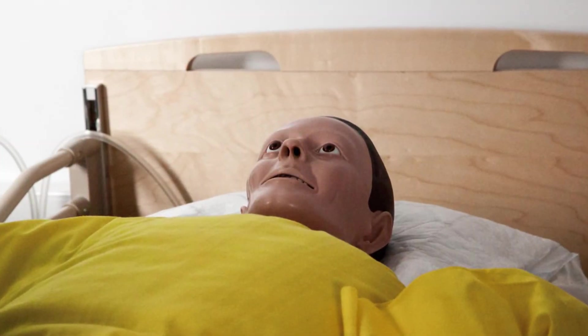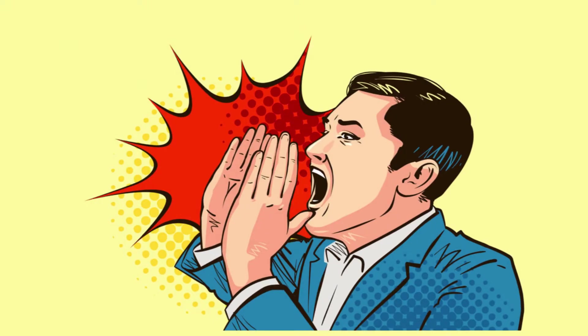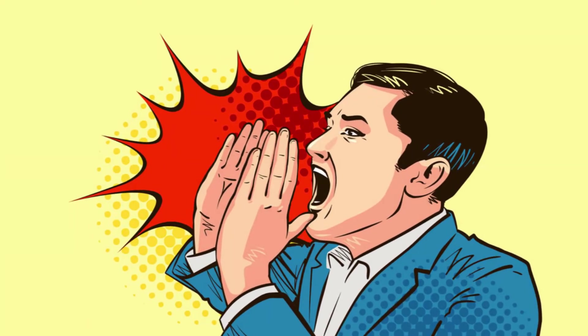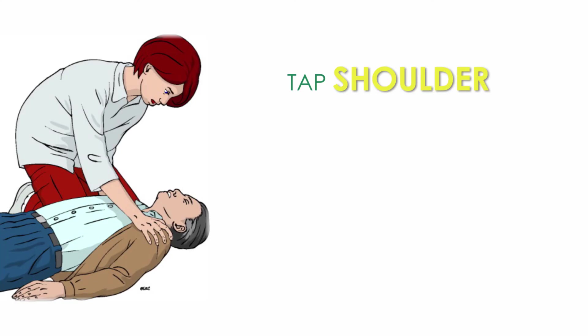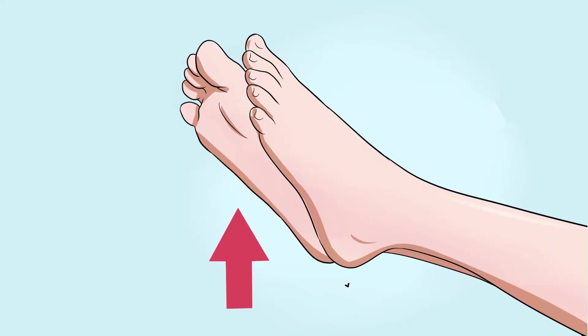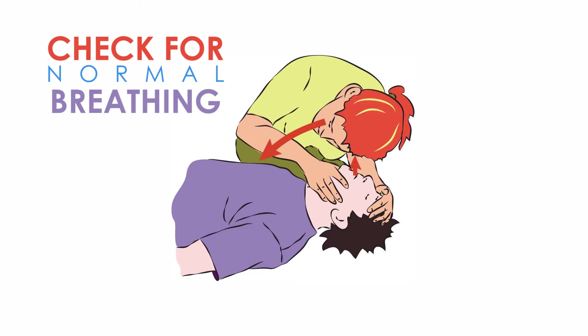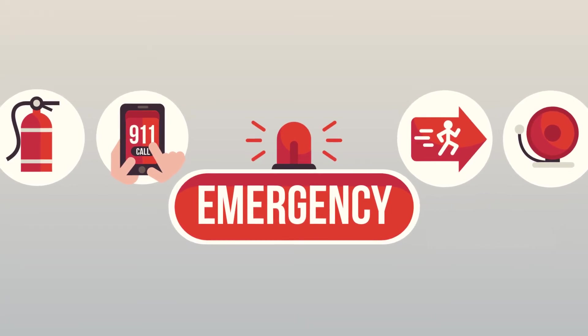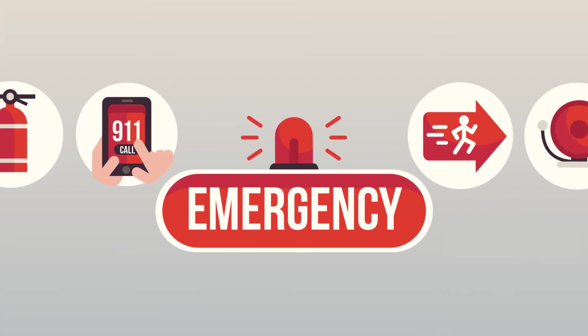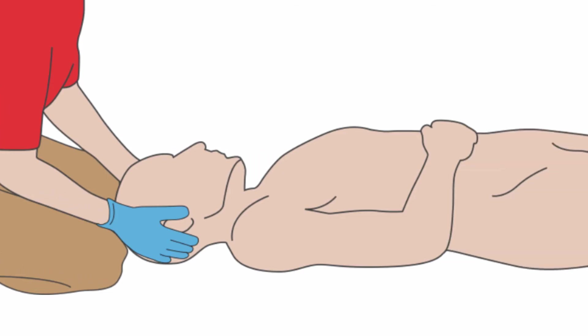If the person appears unresponsive, shout to get the person's attention using their name if it is known. If there is no response, tap the person's shoulder if the person is an adult or child, or the bottom of the person's foot if the person is an infant, while checking for normal breathing. Check for responsiveness and breathing for five to ten seconds. When the person starts breathing, contact emergency services and conduct a head-to-toe check.